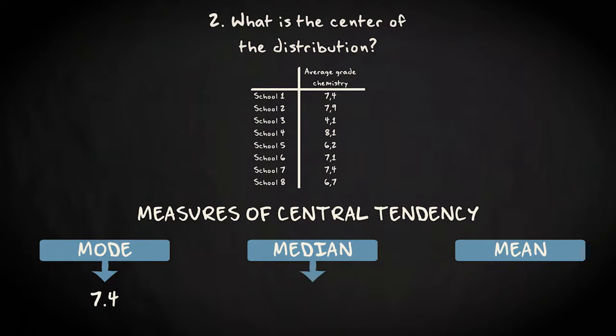The median is the middle value, when we order our values from low to high. This is the order of the values. We have two middle values, 7.1 and 7.4. The average of these two values is 7.1 plus 7.4 divided by two equals 7.25. That's our median.